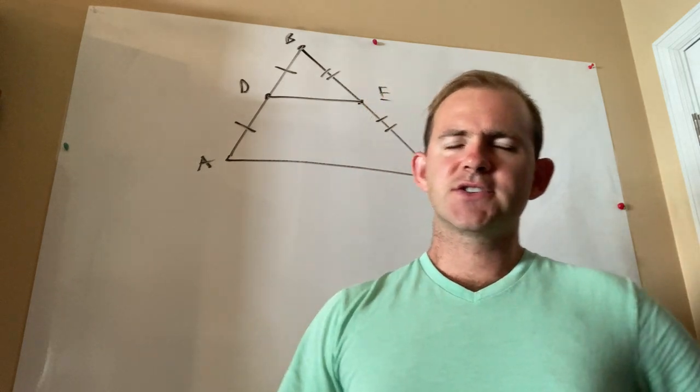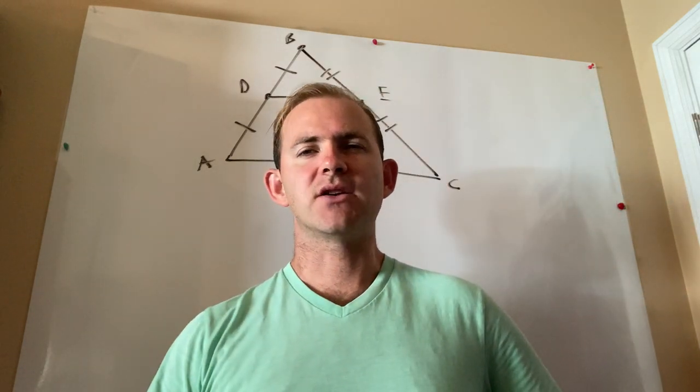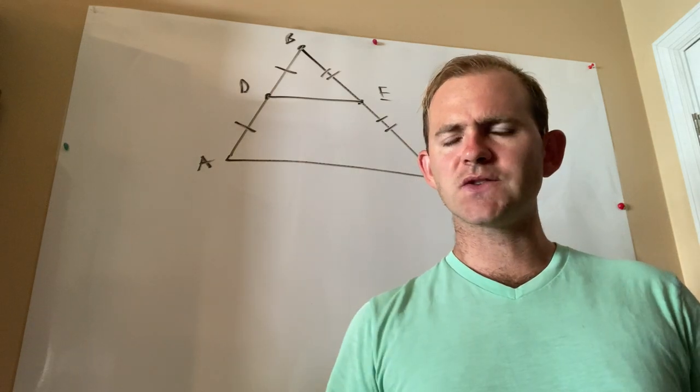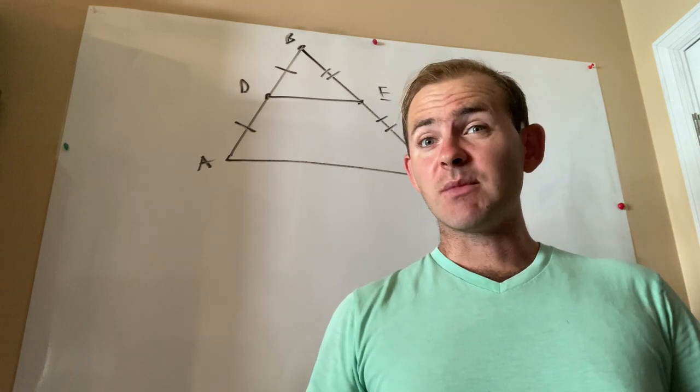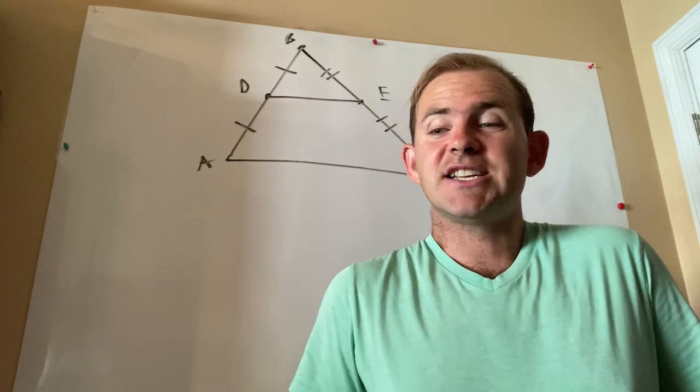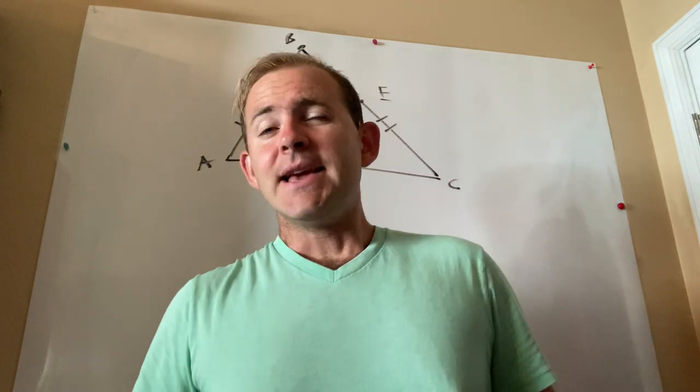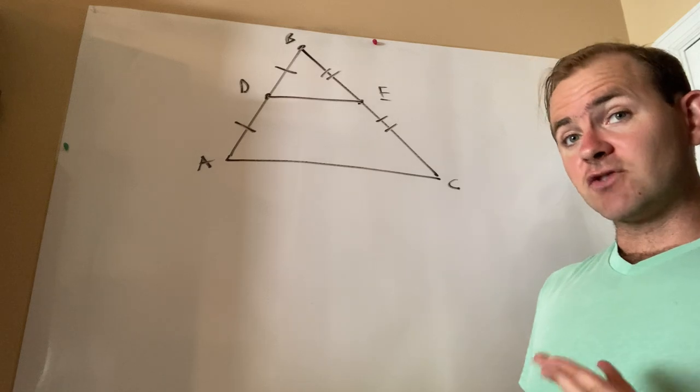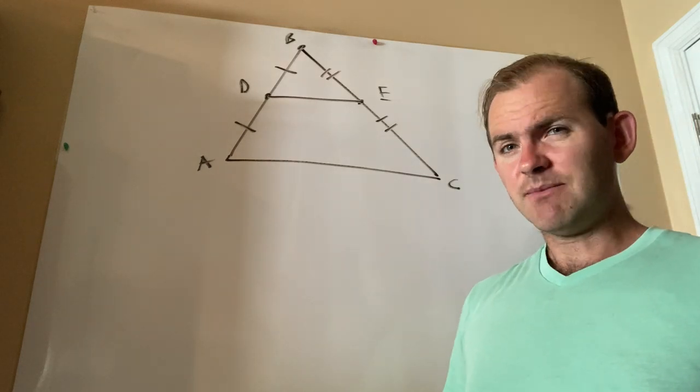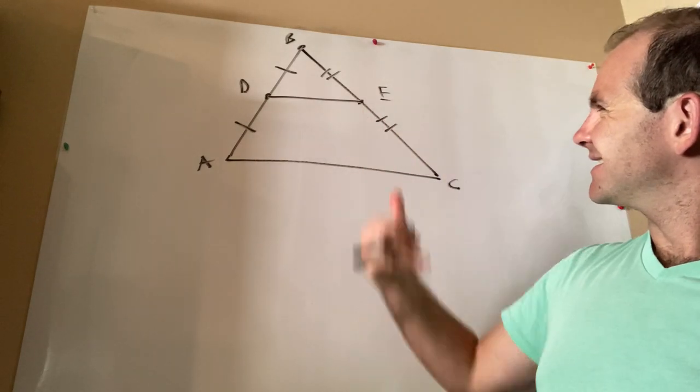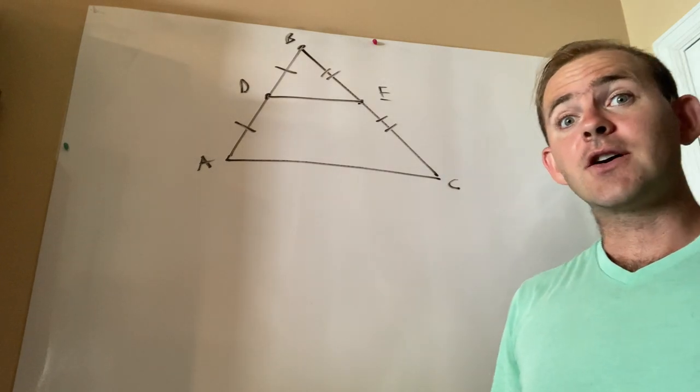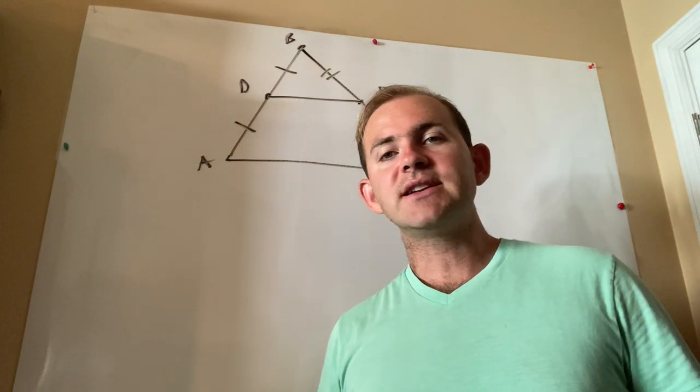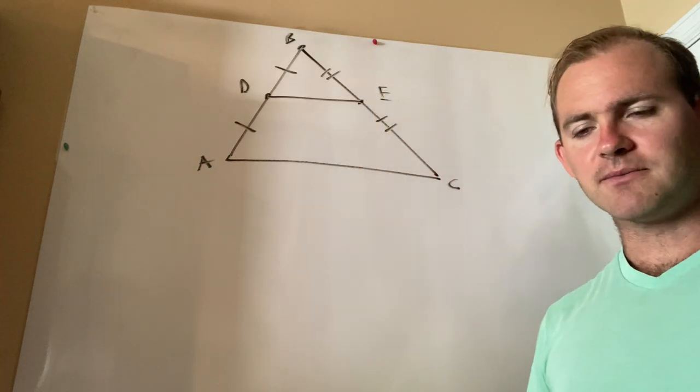First things first, I want you to think about that word mid-segment. Break it up into its constituent parts. Mid means middle, and a segment is just the portion of a line that lies between two endpoints. When we talk about the mid-segment of a triangle, in simple language, we'd say it's just the segment that's in the middle of the triangle. But for the purposes of our unit test and the EOC, we will need to know a slightly more formal definition.